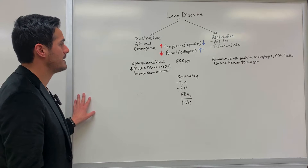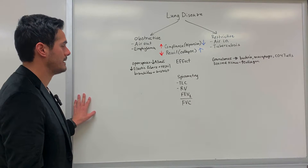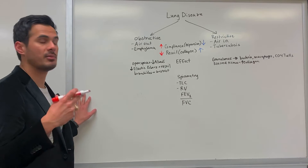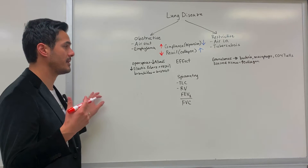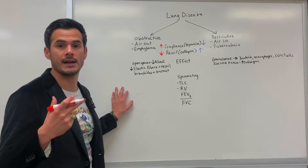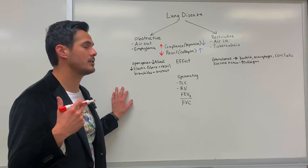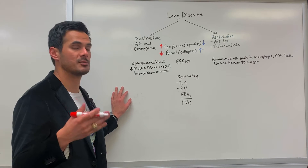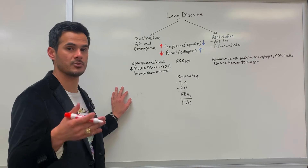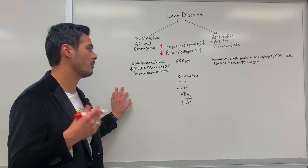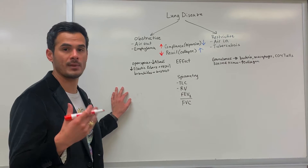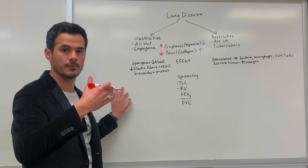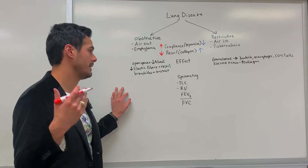The next thing to look at is spirometry. In my previous lecture, I talked about spirometry and how it's a useful tool to distinguish between restrictive and obstructive. But what are some of the abnormalities seen for each?